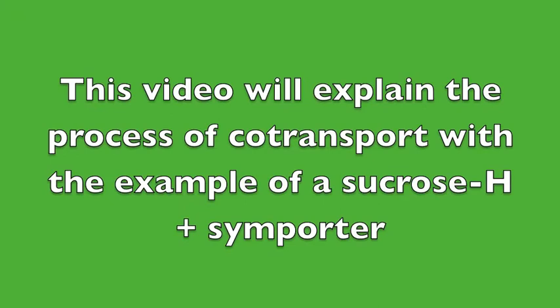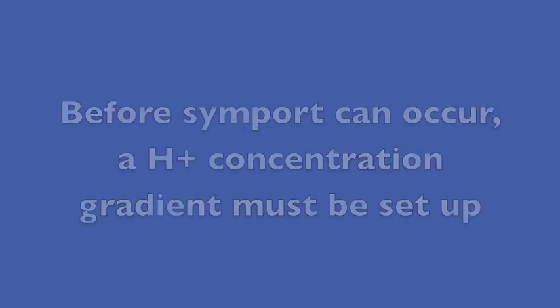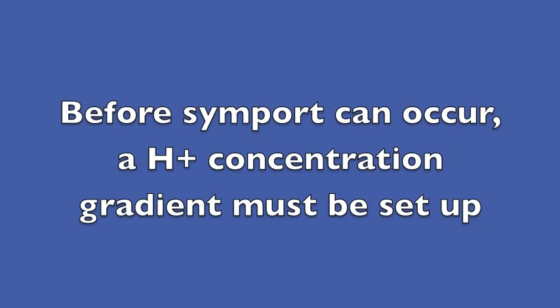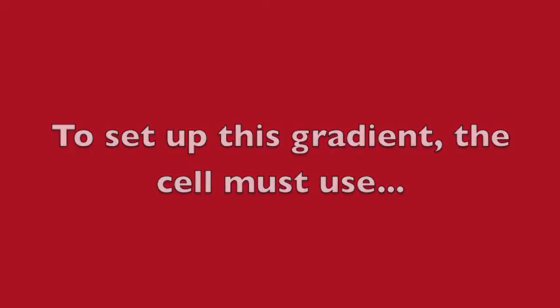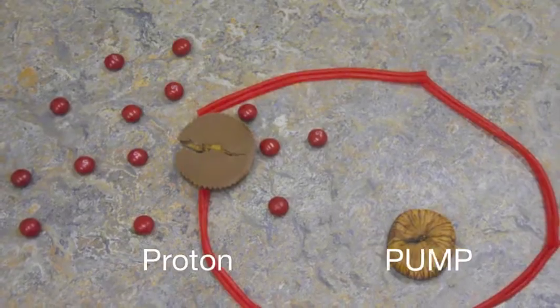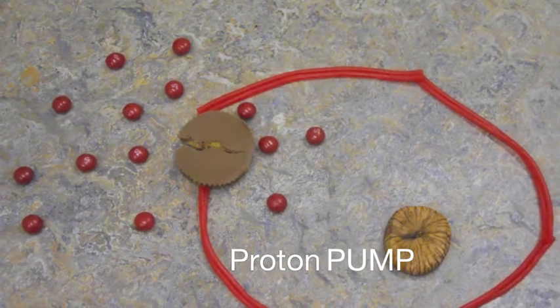This video will explain the process of co-transport, with the example of a sucrose proton symporter. Before a symport can occur, a proton concentration gradient must be set up. To set up this gradient, the cell must use the proton pump.